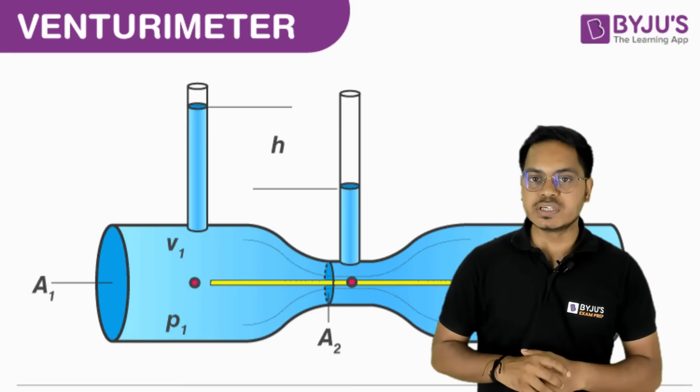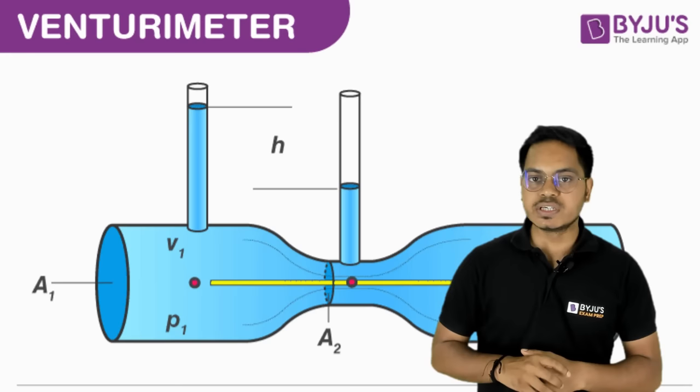There are more practical applications where Bernoulli's equation is used, such as in flow measurement devices like the orifice meter, venturi meter, and pitot-static tube. These are practical measurement tools utilizing Bernoulli's equation in day-to-day life to find either the discharge, flow rate inside a pipe, or the velocity at any section inside the pipe.